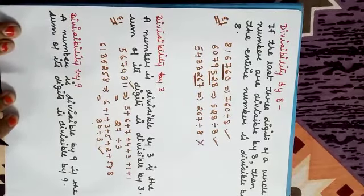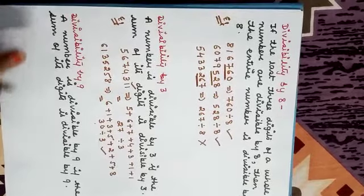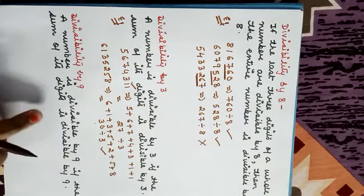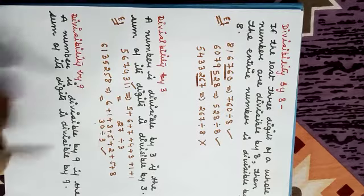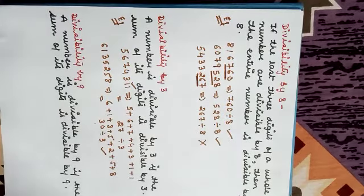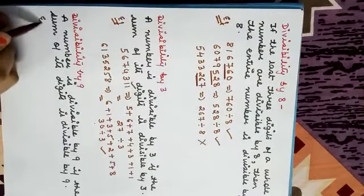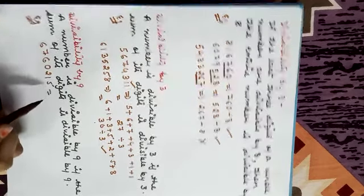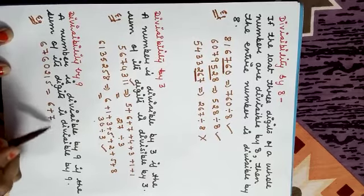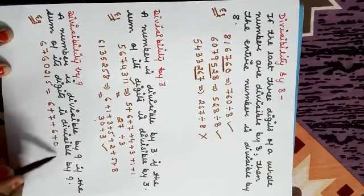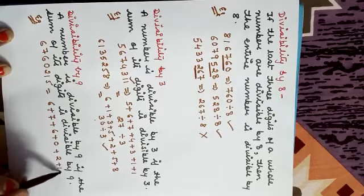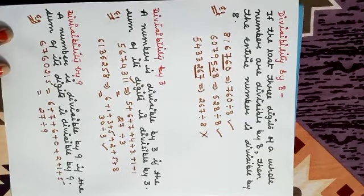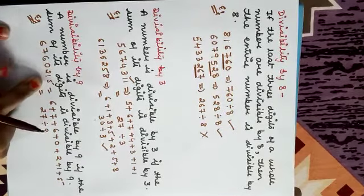Divisibility by 9: A number is divisible by 9 if the sum of its digits is divisible by 9 — same approach as for 3. For example, 6,76,0215: add all digits: 6 + 7 + 6 + 0 + 2 + 1 + 5 = 27. Is 27 divisible by 9? Yes. So the complete number is divisible by 9.